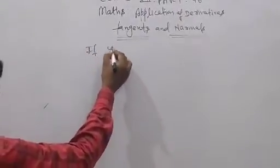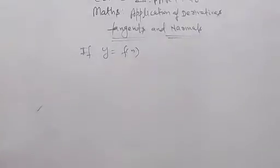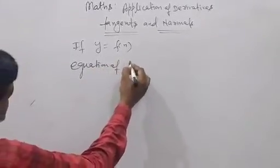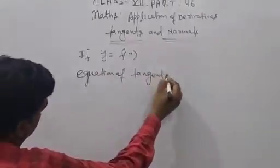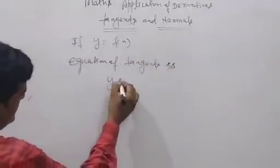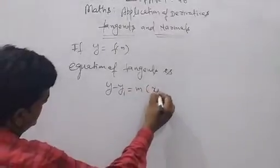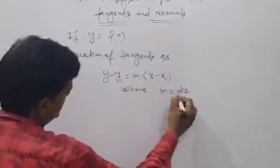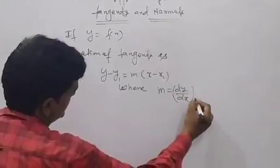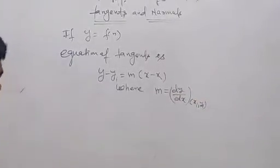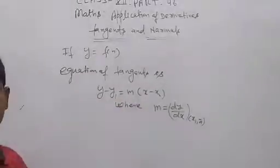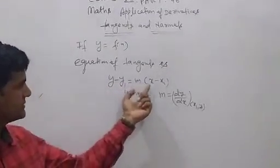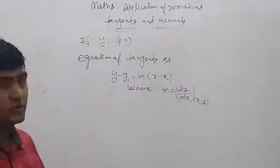If y is equal to a function is given, then the equation of tangent is y minus y1 is equal to m times x minus x1. Where m is equal to dy/dx at (x1, y1). This equation of a line you have already completed earlier in class 10. So y minus y1 is equal to m times x minus x1, where m is equal to slope.